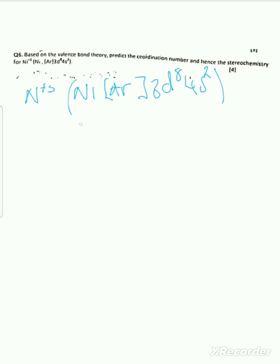They're saying we need to find the coordination number and also the stereochemistry. To get all four marks, you need to find the coordination number, the hybridization, together with the geometry — then you're done with all the questions they're looking for.